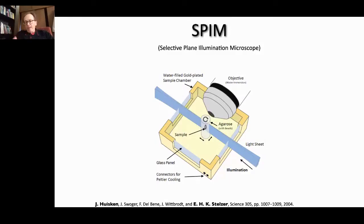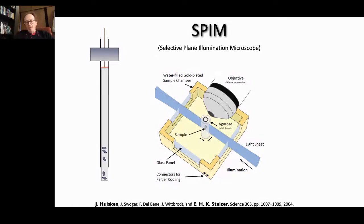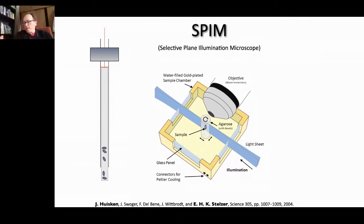SPIM microscopy is distinctive because of how the sample is mounted. In SPIM, it is mounted in a very unusual way — not on a coverslip, but embedded in some kind of semi-solid gel, for example agarose. It is included in a capillary, suspended by gravity in front of the lens, and you create a plunger system to push this agarose column outside of the capillary so that it is immersed in the imaging chamber with no additional glass-water interface. Imaging in SPIM typically happens in an aqueous environment in water, which provides the right environment for many specimens.